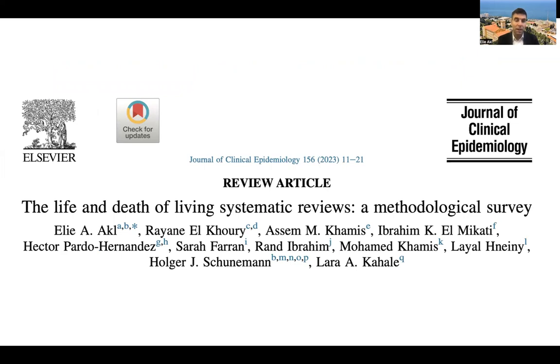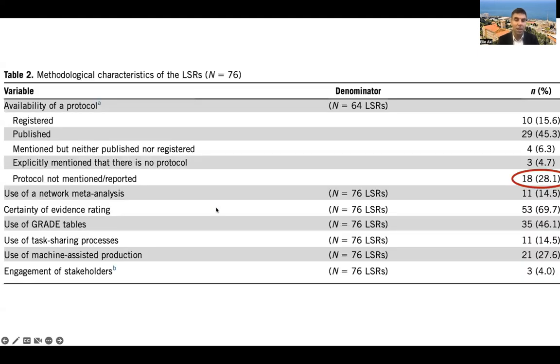We recently published this paper about the life and death of living systematic review. This study was not restricted to COVID-19 living systematic reviews, but many of the included reviews addressed the pandemic. In terms of the availability of the protocol, almost a third of the living systematic reviews did not have a protocol mentioned or reported. More than 30% did not assess the certainty of the evidence. More than half did not use GRADE tables, which are standardized tables to present the statistical information along with the certainty of the evidence. And only 4% engaged stakeholders. These are indicators that the methodology was not as optimal as it could have been.